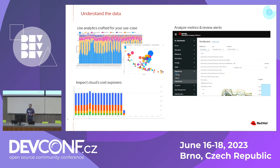How to do that? There are several methods. You can analyze your metrics and review alerts using Prometheus and Grafana — both alerts from the infrastructure and your own alerts. You can inspect cloud cost explorers for GCP and AWS. And you can craft your own analytics tools; for example, we use Google Studio for that.